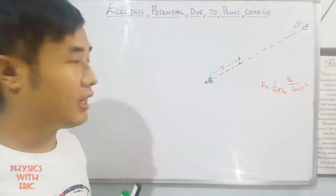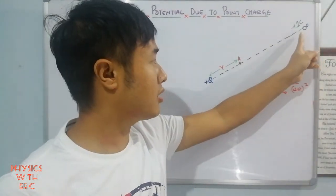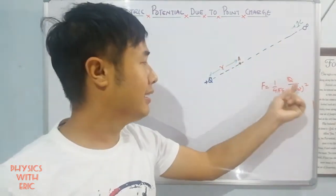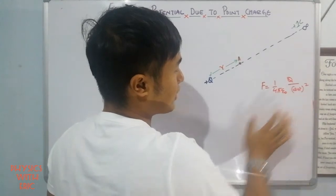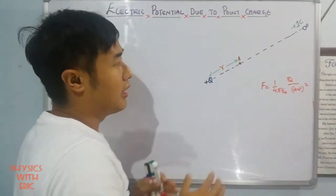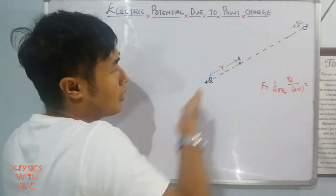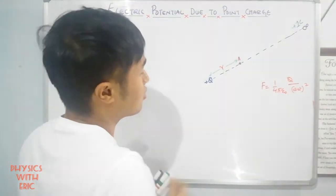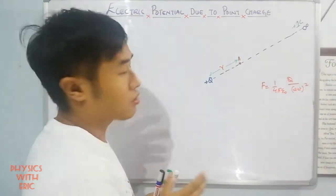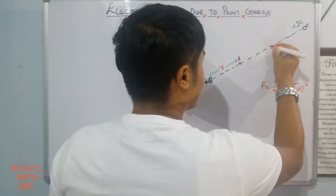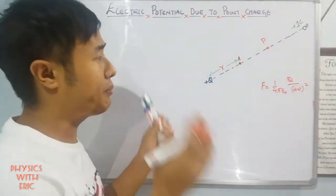The problem is that the distance is not fixed — it varies as the charge moves from infinity to the point. So we will consider an arbitrary point along the path and consider the small displacement element dx at that arbitrary point.